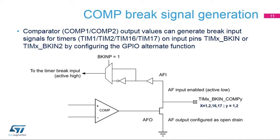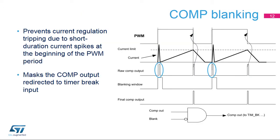The comparator can be used in the cycle-by-cycle regulation loop for monitoring the peak value of the current flowing into the load. The purpose of the blanking function is to prevent incorrect current regulation tripping due to short-duration current spikes at the beginning of the PWM period. Short current spikes caused by activating the power switches can produce false pulses on the comparator output, marked in blue on the diagram. These pulses need to be masked by a blanking window to avoid false fault detection, and the blanking window waveform can be generated by one of the timer output channels.